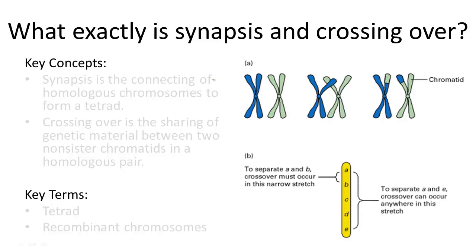During meiosis, synapsis and crossing over occur between two chromosomes in a homologous pair. From an evolutionary standpoint, by exchanging genetic information between the mother and father chromosome, there is an advantage of increasing variability within the gametes produced from meiotic division.